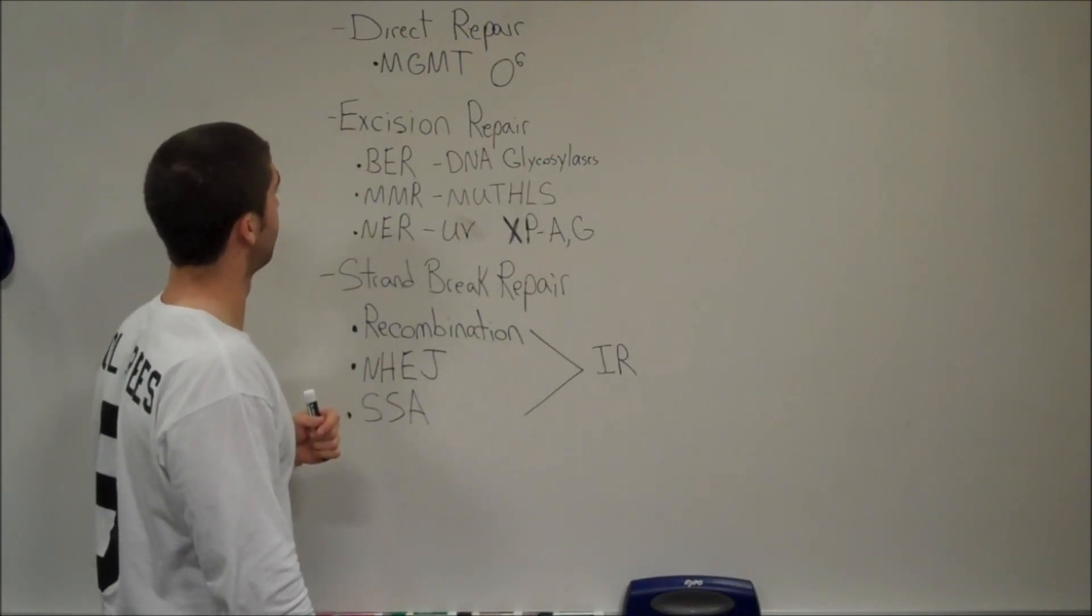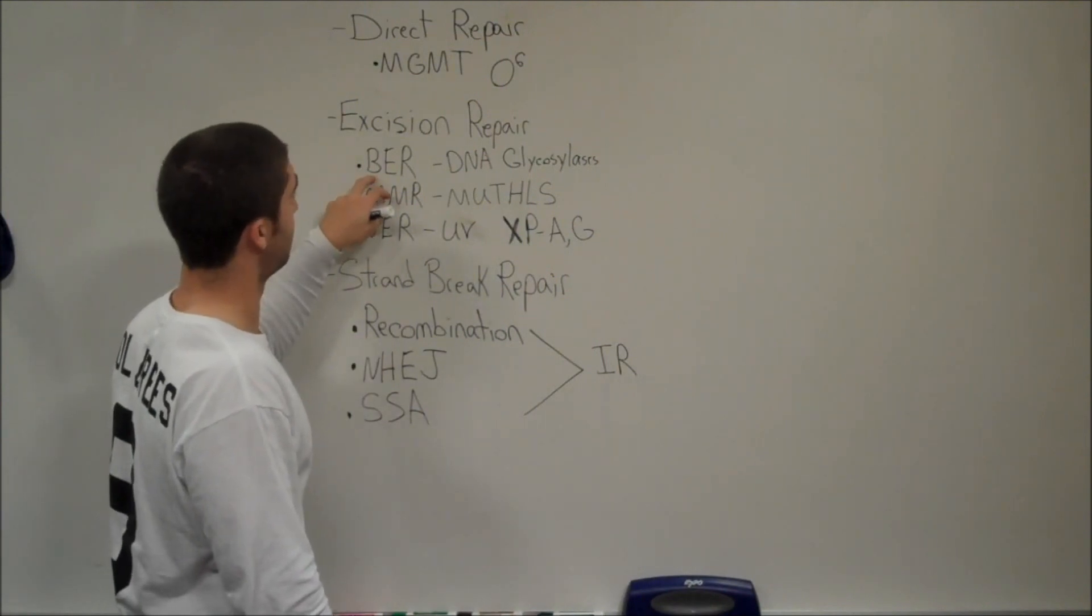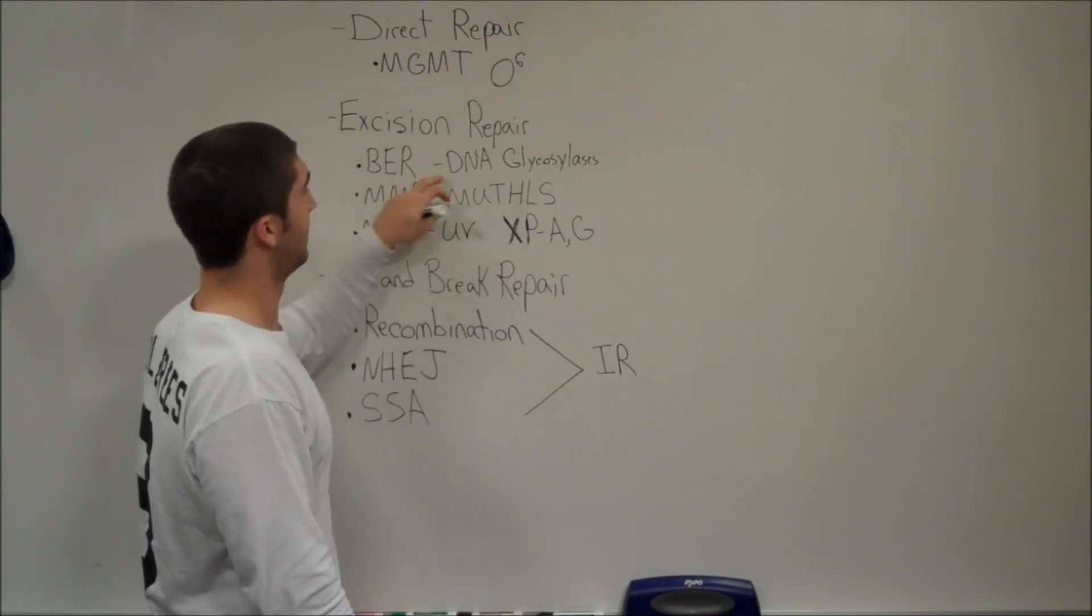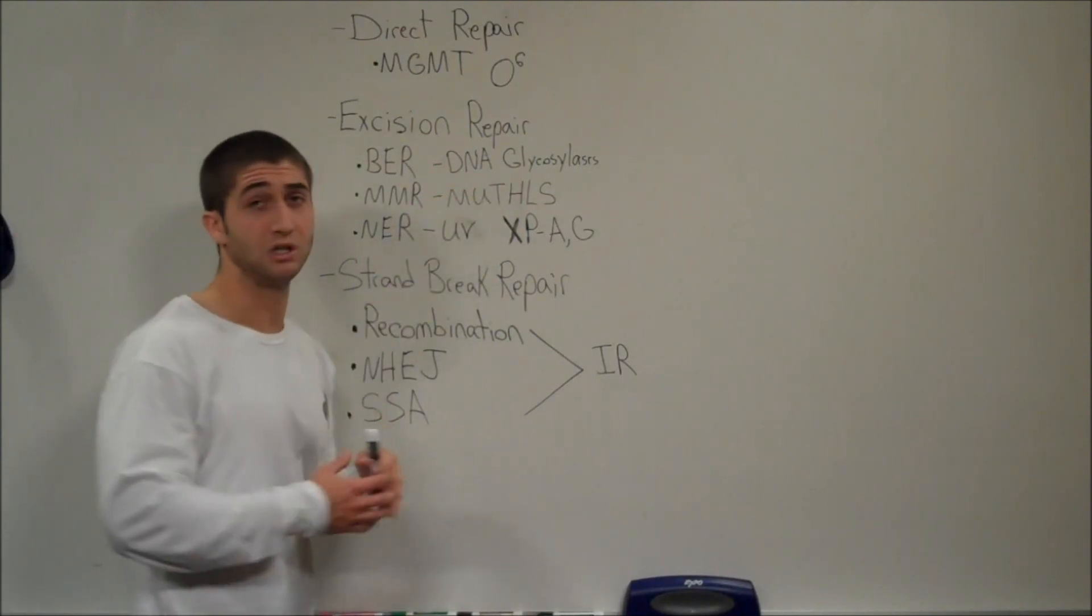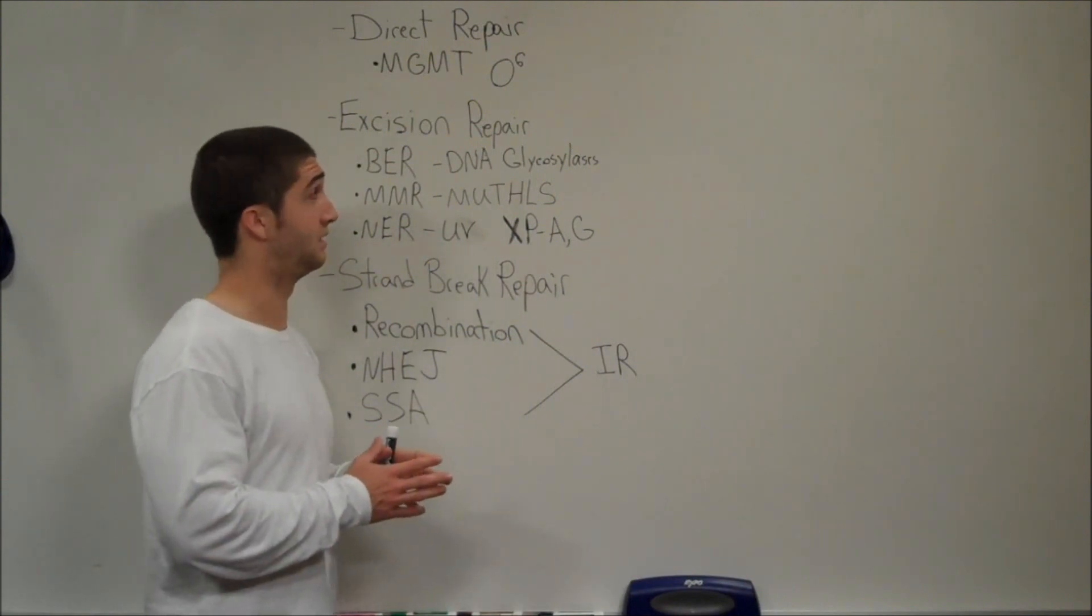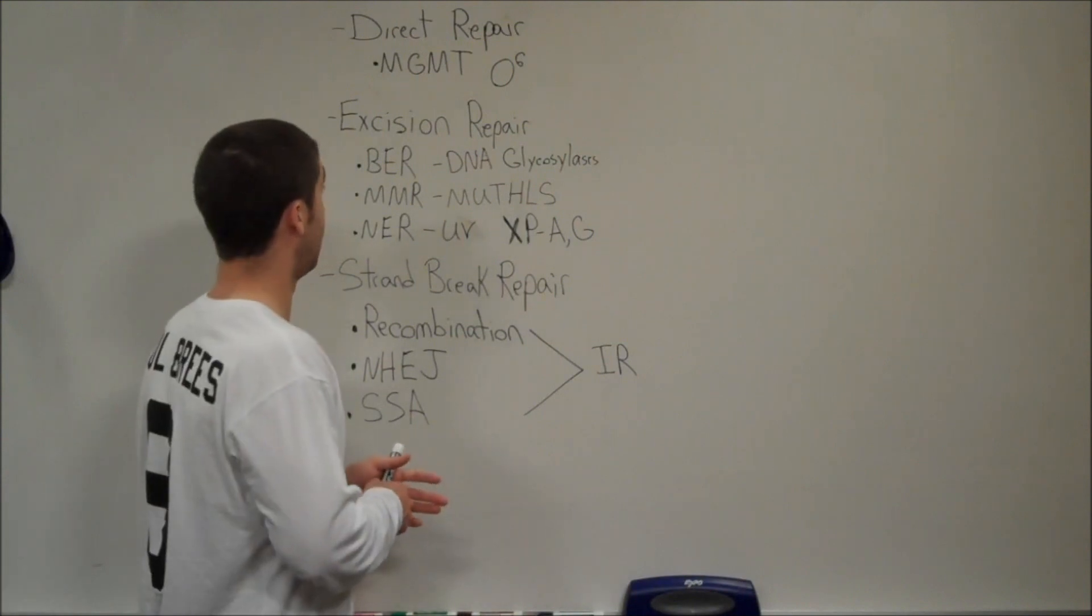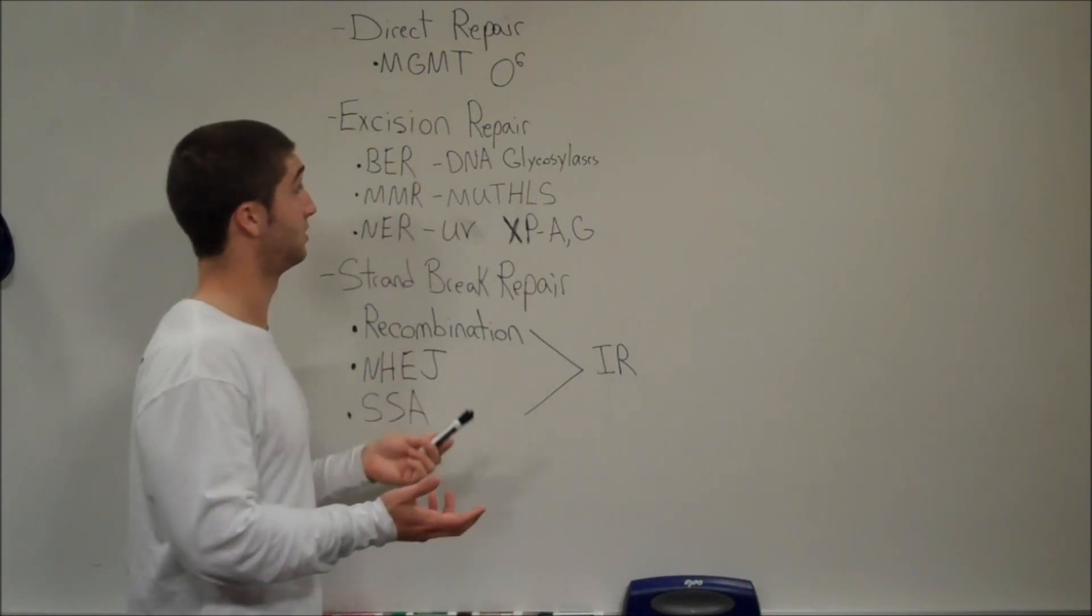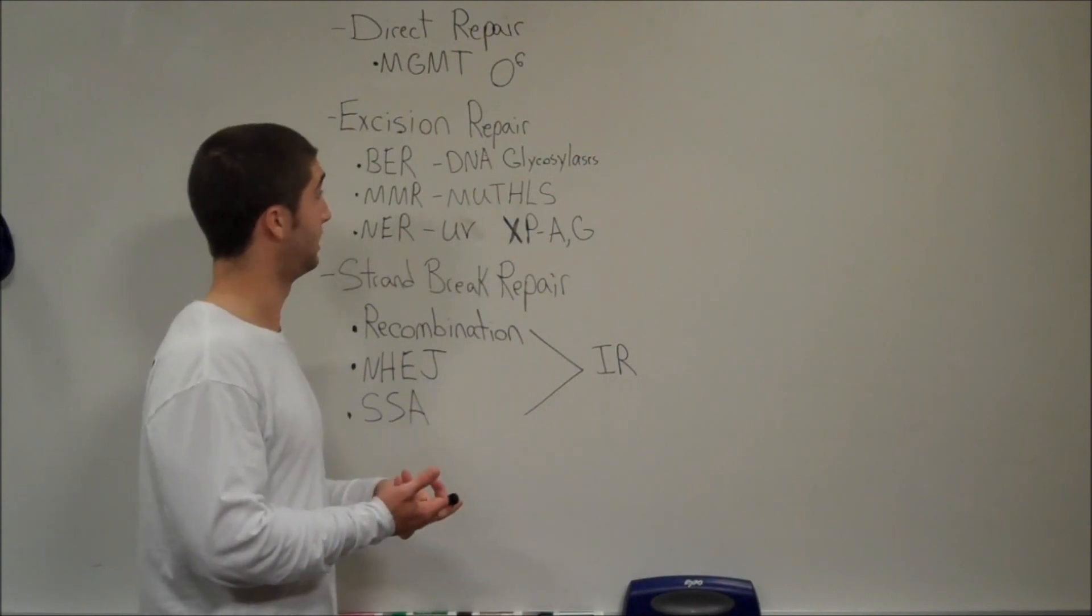The next one I'm going to talk about is called excision repair, and that has a couple different types. We're going to talk about base excision repair pathway. It's going to use what's called DNA glycosylases. These enzymes, there's a bunch of different types of these enzymes, they all recognize different types of damaged DNA. A base excision repair pathway repairs mismatches in DNA and just general DNA damage.